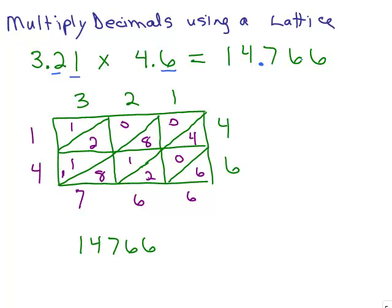The other way is to put the decimal right in the lattice. So 3.21, put the decimal point here, and 4.6, you put the decimal right here. And what you do is you see if this one's going down and this one's going across, where do they meet? This decimal goes down, this decimal goes across, it goes right here. And you follow the diagonal down and that is where the decimal goes. So that would be 14.766, or 14 and 766 thousandths.